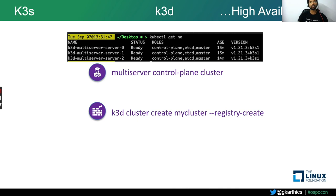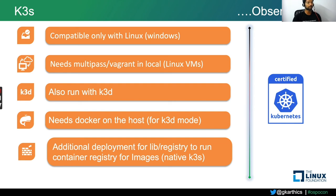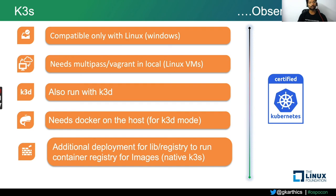The observations for K3S: it works only with Linux distributions. For local desktop machines, it needs a virtual machine management tool like Multipass or Vagrant. An alternate option is K3D, but K3D requires Docker on your host machine since it runs K3S inside a Docker container. If you need a container registry for your local cluster, you must deploy it yourself with native K3S, or use the registry-create flag in K3D. K3S is also a CNCF conformance certified Kubernetes distribution.